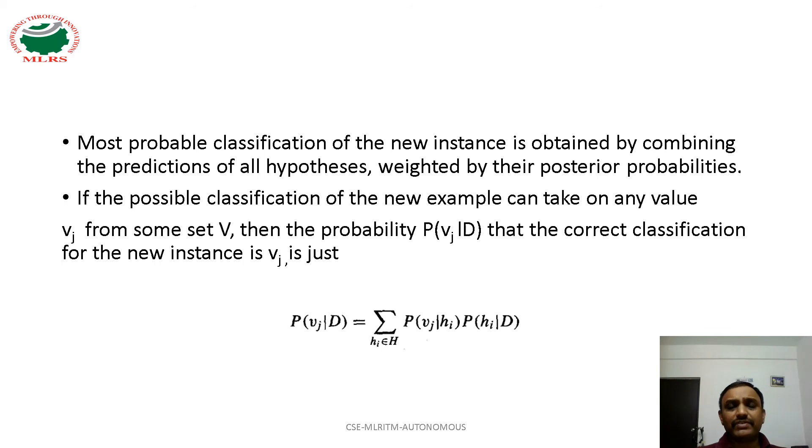Most probable classification of the new instance is obtained by combining predictions of all hypotheses, weighted by their respective posterior probabilities. If the possible classification of the new example can take on any value Vj from some set capital V,